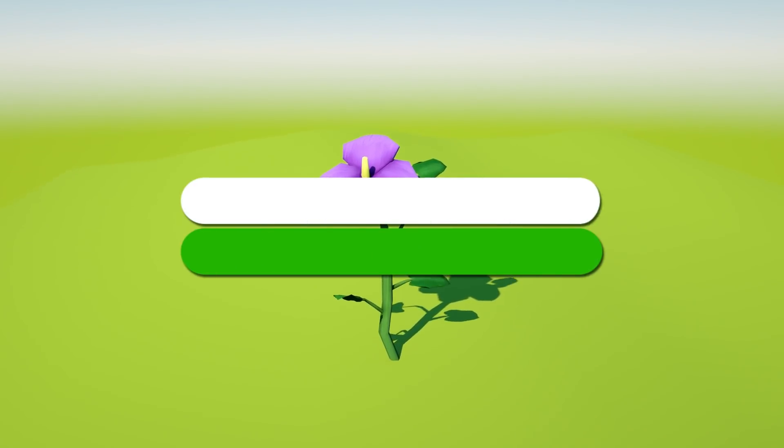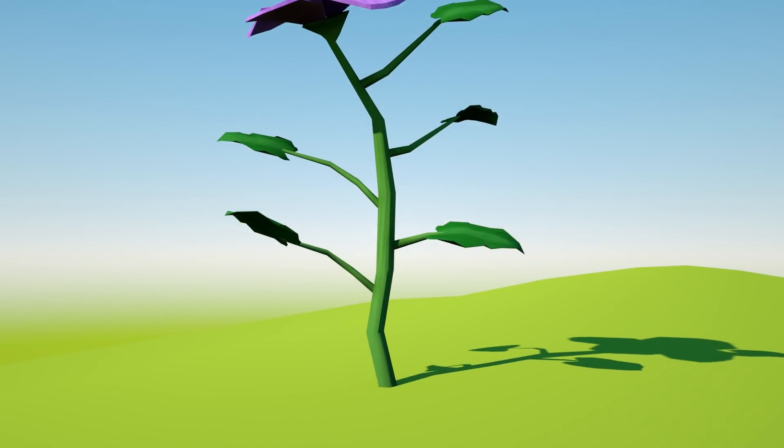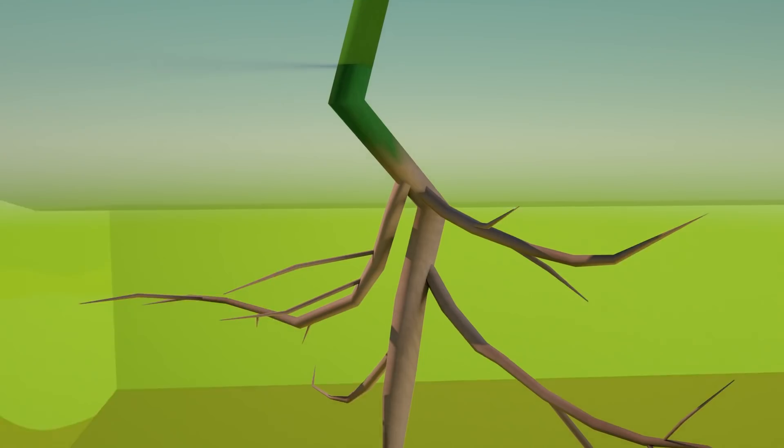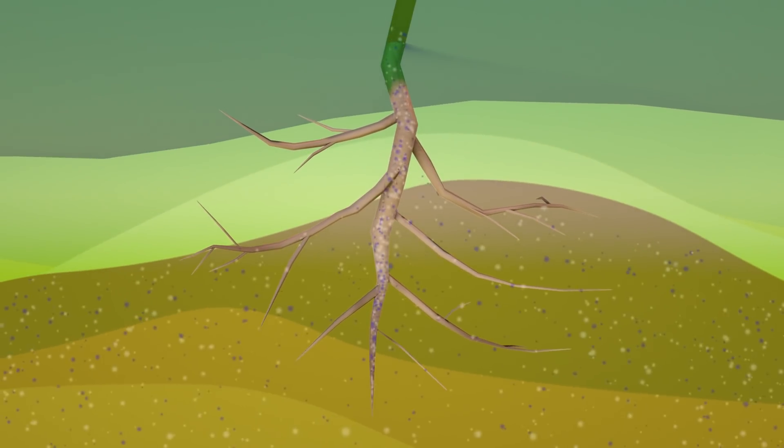Today we're going to learn about the parts of the plant. Their roots. Their roots lie below the surface of the soil. They hold the plant together and they absorb water and mineral salts.